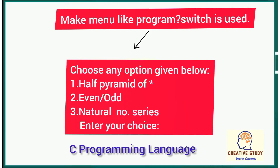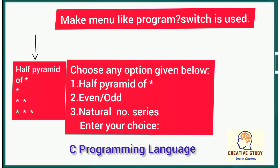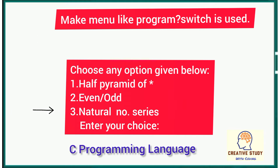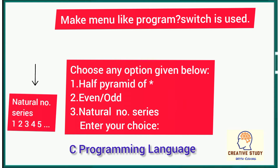If you want to make a menu-like program where multiple choices are given and you can choose any one at a time, you need to use a switch statement. For example, there are three choices: one, two, three. If I choose number one — half pyramid of star — it will show that output. If I choose number three — natural number series — it will show that output.